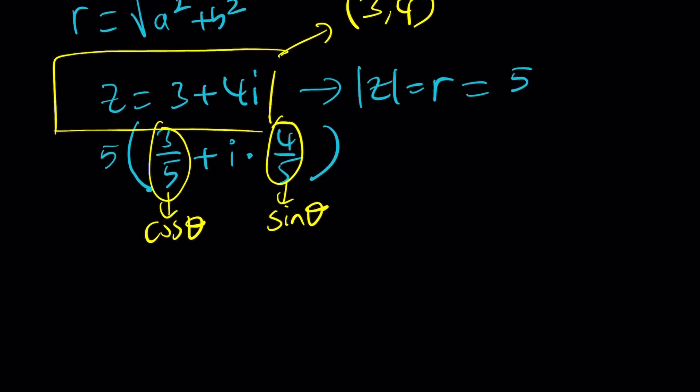You could also look at the tangent. So tangent theta is going to be b over a, which is 4 thirds. And then from here, theta can be written as tan inverse or arctangent 4 thirds. You've got to be careful with the arctangent though, because we need to know the quadrant. There are two values between 0 and 2 pi.